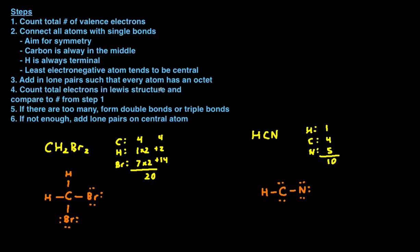Step four: count the total number of valence electrons in the Lewis structure and compare it to the number from step one. Counting up: two, four, six, eight, ten, twelve, fourteen — so this structure has fourteen valence electrons, but we're only supposed to have ten. We have too many valence electrons, so that's where we start forming double or triple bonds. To form a double bond between carbon and nitrogen, we erase a lone pair from each of those atoms.